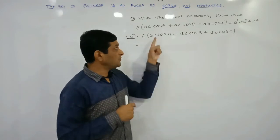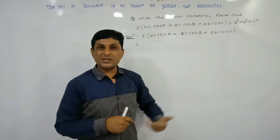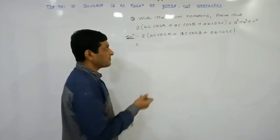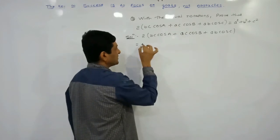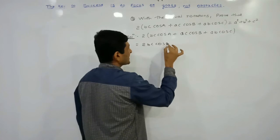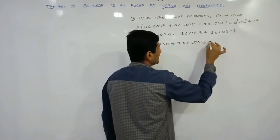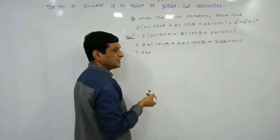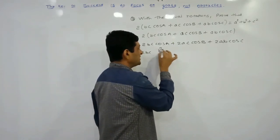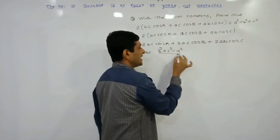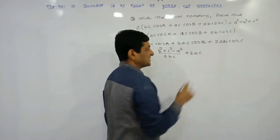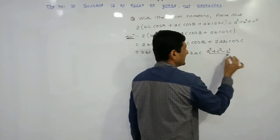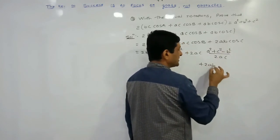The left-hand side involves cos A, cos B, cos C, which can be converted using the cosine rule. Multiplying by 2 for all terms in the bracket: we get 2bc·cos A + 2ac·cos B + 2ab·cos C. Now substituting the cosine rule values: cos A = (b² + c² − a²) / 2bc, cos B = (a² + c² − b²) / 2ac, cos C = (a² + b² − c²) / 2ab.